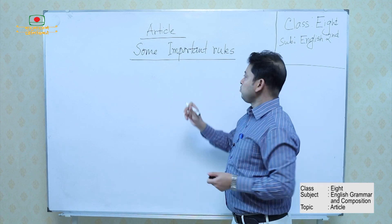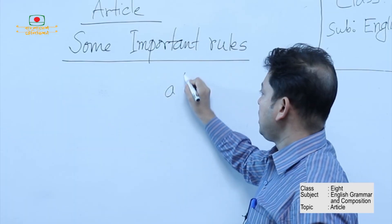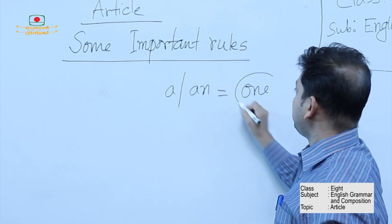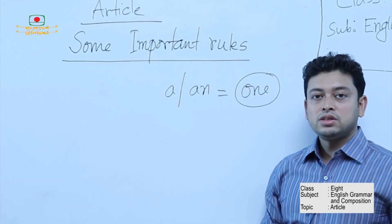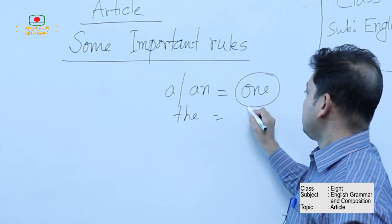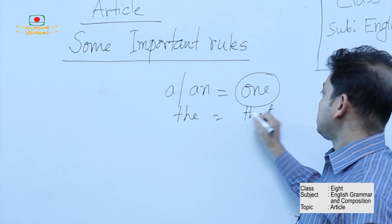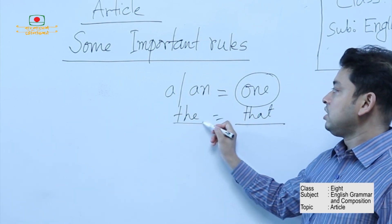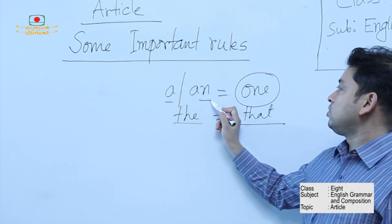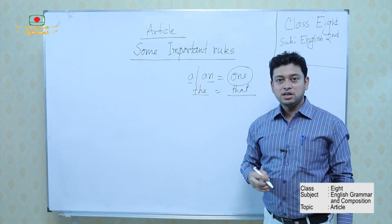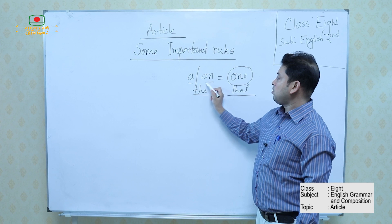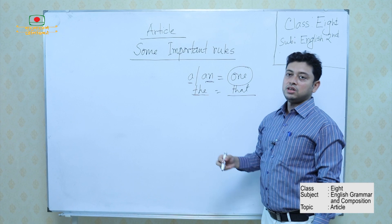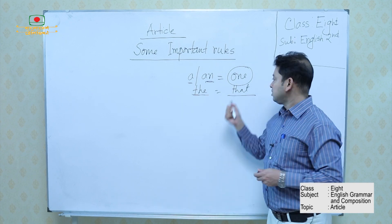When discussing indefinite articles A or AN, one rule is very important. A or AN gives a meaning similar to 'one,' while THE gives a meaning similar to 'that.' Now the first rule: A or AN is used when a proper noun acts as a common noun. For example, 'Nuzrul Islam is our national poet' — here the name is a proper noun. But 'You are a Nuzrul, I see' — here Nuzrul becomes a common noun, referring to the talent or genius of Nuzrul.